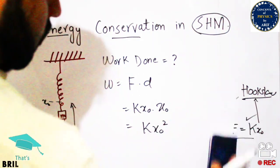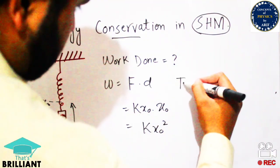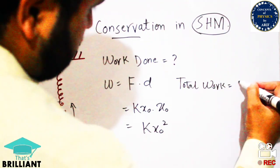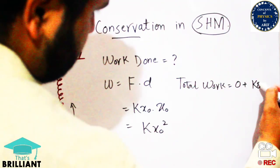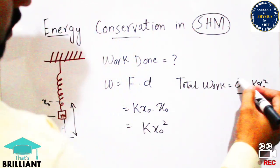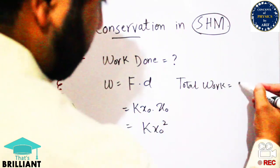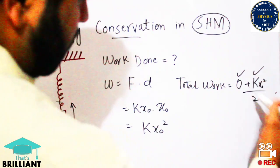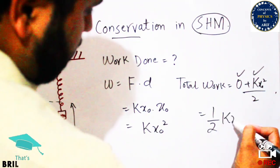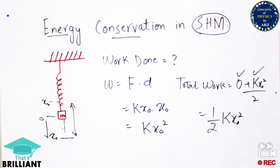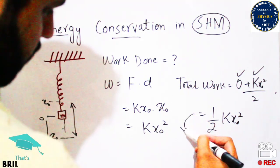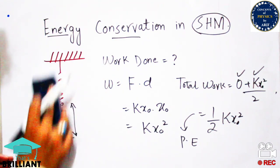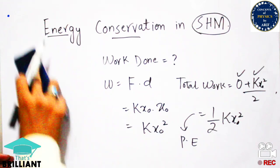The total work done is the average of initial work done plus final work done, divided by 2. This gives us (0 + kX₀²) / 2, which equals ½kX₀². This total work done is also known as potential energy.